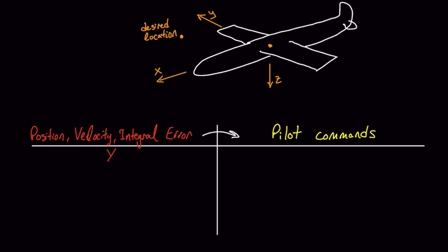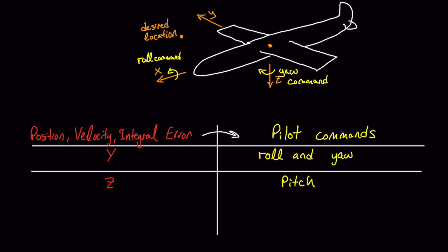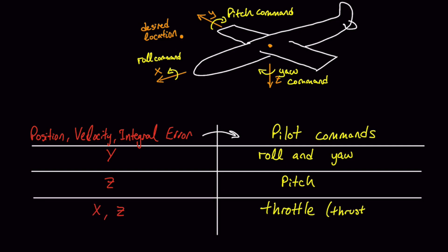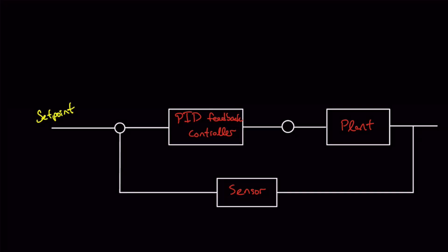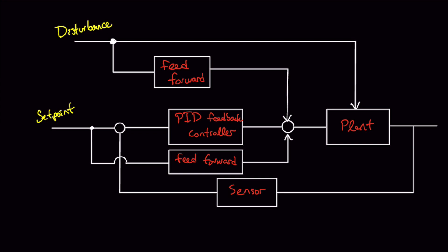Roll and yaw come from the Y component — that is to say, if we're left or right of the target, we should roll and yaw towards it. Pitch comes from the Z component, since we want to pitch up or down depending on whether we need altitude. Throttle depends on both X and Z, because being behind or below means we need more thrust to catch up. We then scale each command with an extra set of gains for further flexibility. This PID controller is rather simple but effective as a starting point. More advanced methods like feedforward could be added later.